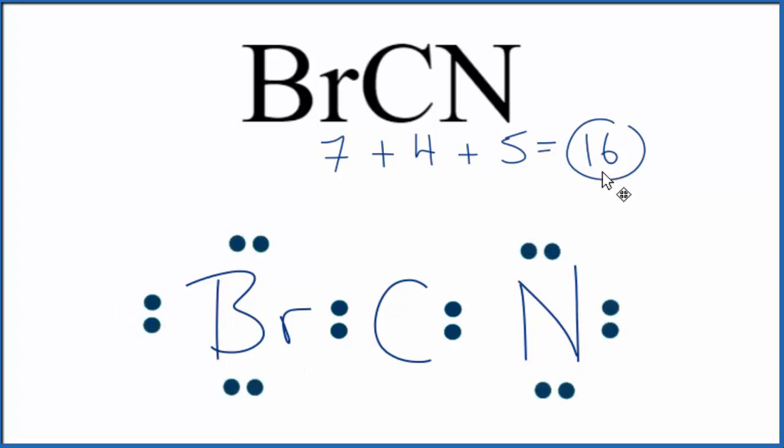At this point, we've used all 16 valence electrons. So we're out of valence electrons. The bromine has eight, that's all good. The nitrogen has an octet as well. The carbon only has four. So we're going to have to share some of the electrons.